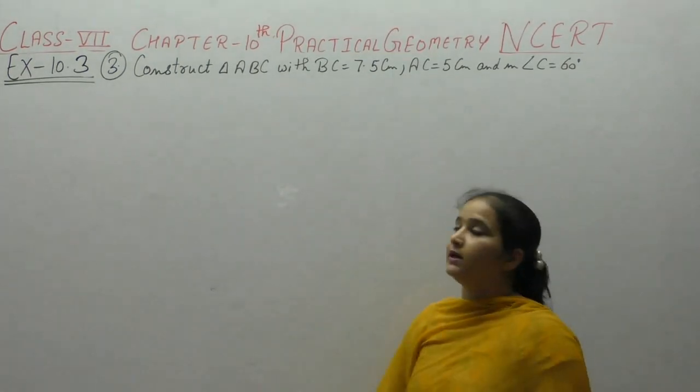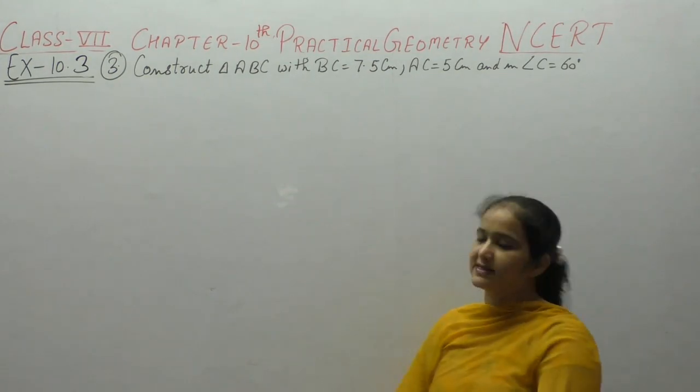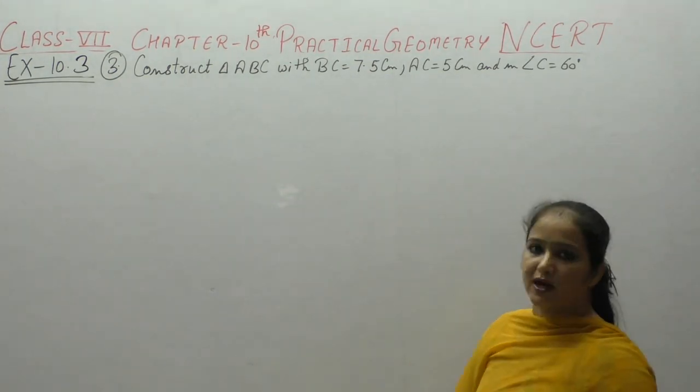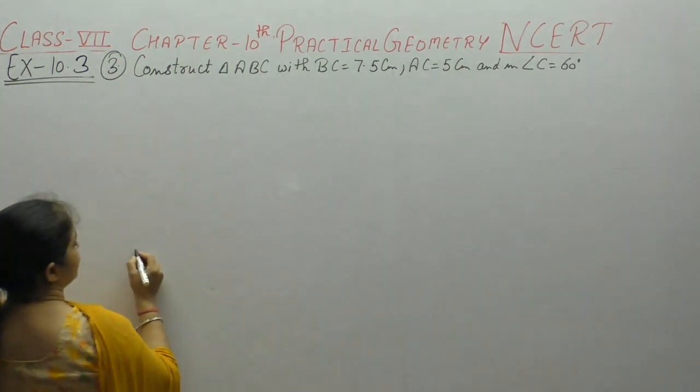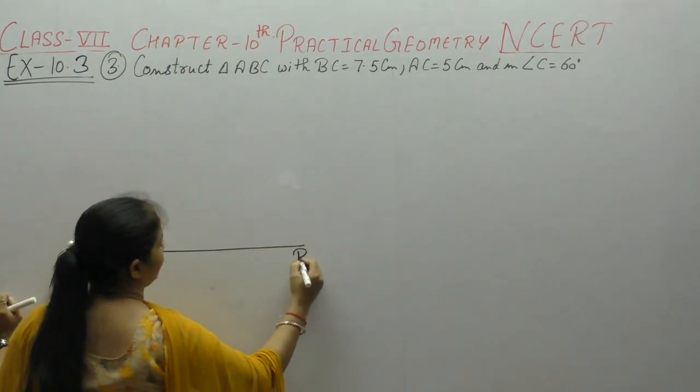Next question, construct triangle ABC with BC 7.5 cm, AC 5 cm, measure of angle C 60 degrees. Draw what we have.